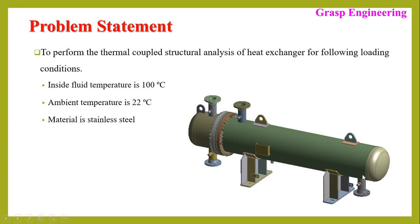The tube side fluid will enter through the inlet, flow through the tubes, and exit at the outlet. The shell side fluid flows over the tubes. However, in this video we will not go into that depth — we will simply consider the constant temperature of 100°C coming inside the heat exchanger, apply convection at ambient temperature of 22°C on the outside, and define the material.